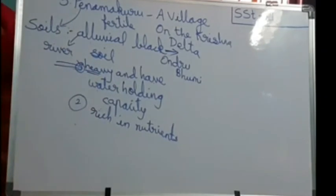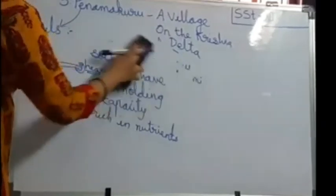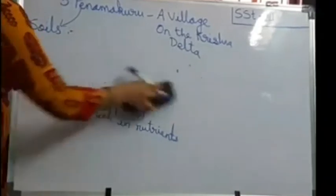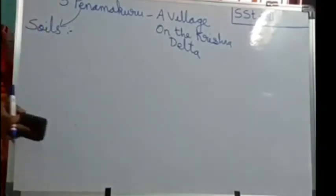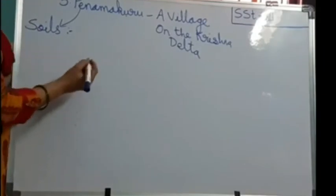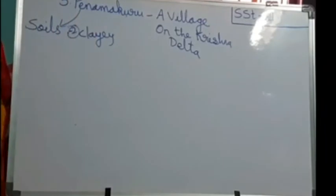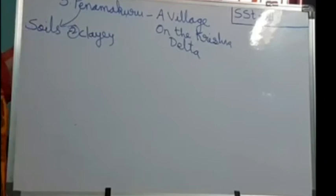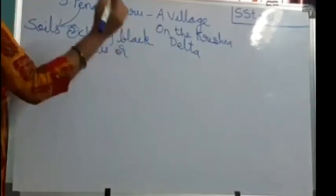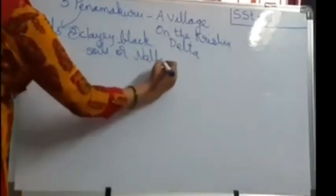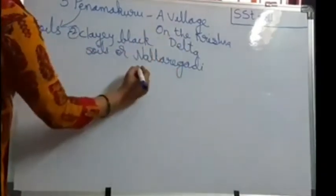The second type of soil available in Penamakuru village is clay black soil — fine and clay black soil. This is black in color and is a natural soil. The first soil I said was alluvial black soil or Ondra Bhoomi. The second soil is clay black soil, also called in Telugu Nallaregadi Bhoomi.